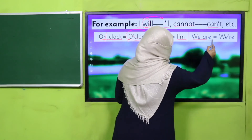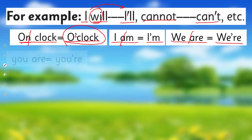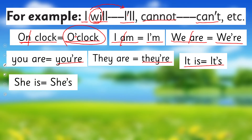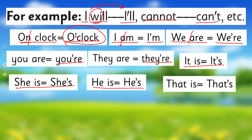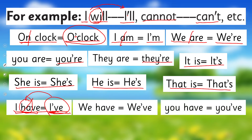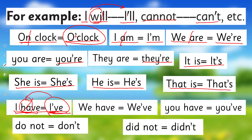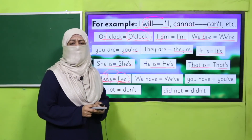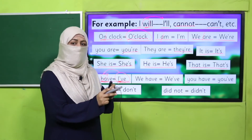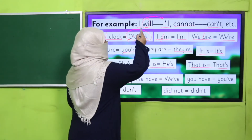Here are more contraction examples: 'I am' becomes 'I'm' — we remove the 'a' and put an apostrophe. 'We are' becomes 'we're.' 'You are' becomes 'you're.' 'They are' becomes 'they're.' 'It is' becomes 'it's.' 'She is' becomes 'she's.' 'He is' becomes 'he's.' 'That is' becomes 'that's.' 'I have' becomes 'I've' — we remove 'h' and 'a.' 'We have' becomes 'we've.' 'You have' becomes 'you've.' 'Do not' becomes 'don't.' 'Did not' becomes 'didn't.' There are many more — we will gradually keep learning. This is how we use an apostrophe in contraction: we omit one or more letters and put an apostrophe to make the same expression in a shorter form.